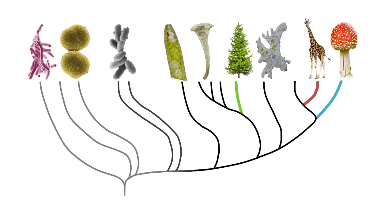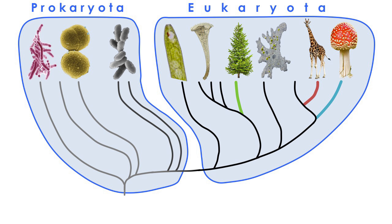And in the third module I'll tell you a bit about the evolution of these major lineages of life. Life on Earth can be divided into two major groups: the prokaryotes and the eukaryotes. These two groups are often referred to as super kingdoms or empires.